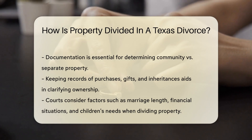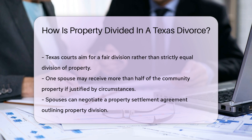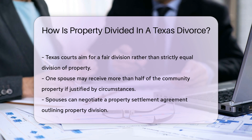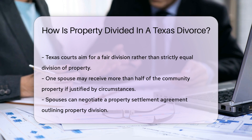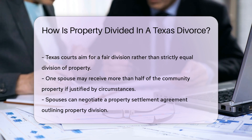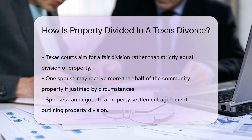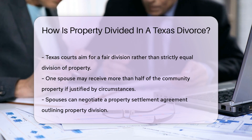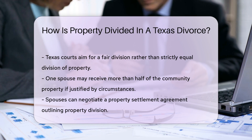When dividing property, the court considers several factors. These include the length of the marriage, the financial situation of each spouse, and the needs of any children involved. Texas courts aim for a fair division rather than an equal one, meaning one spouse may receive more than half of the community property if justified.